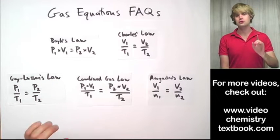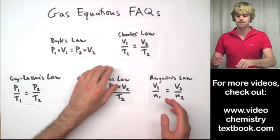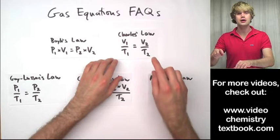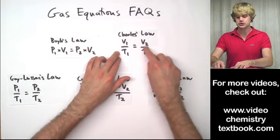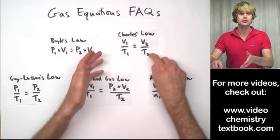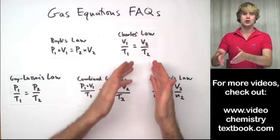The absolute most common question that I get is when someone says I'm trying to solve for Charles' Law and in your video you solve for say V1 but I need to solve for T2. What do I do? In other words, you need to rearrange Charles' Law to solve for T2.